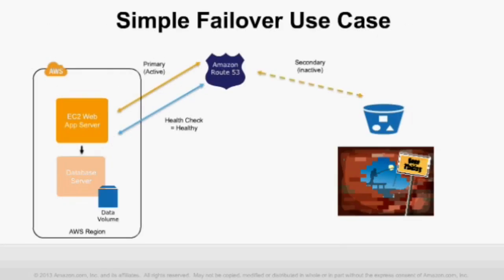In the simple failover diagram, you can see an application stack running in an AWS region on the left. Amazon Route 53 routes traffic to that region as your primary DNS record, and you've set up a health check verifying the application is healthy. There's also a secondary site — a 'gone phishing' page hosted on Amazon S3 — which is inactive while your primary is healthy. If your primary application goes down, the health check becomes unhealthy and Route 53 stops routing traffic to the primary, instead routing all traffic to the secondary endpoint.